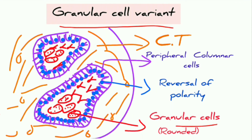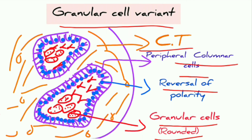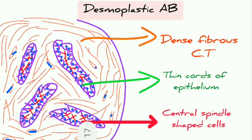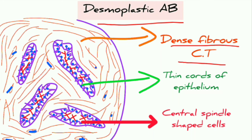In granular cell variant, special granular cells are seen that are usually round in structure, along with connective tissue stroma suspending islands of tumor. Peripheral columnar cells and reversal of polarity of basal cells are seen here as well.